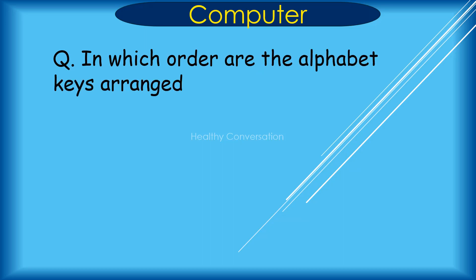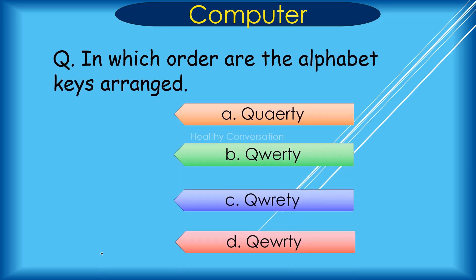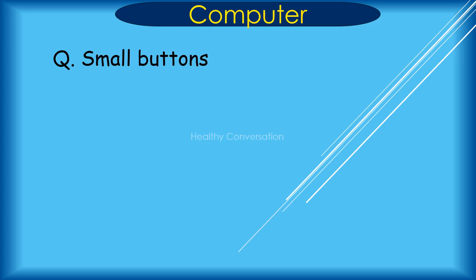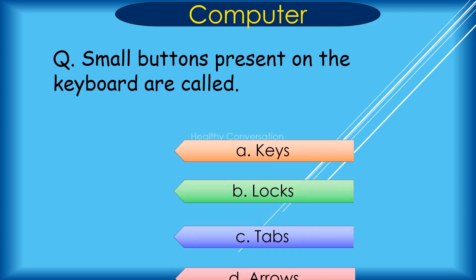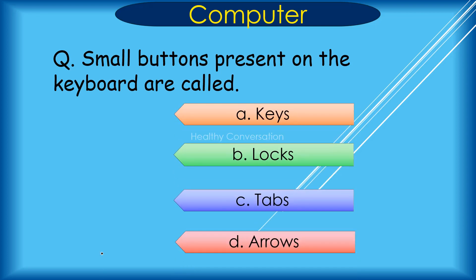Question: In which order are alphabet keys arranged? Correct answer is B. QWERTY. Small buttons present on the keyboard are called A. Keys, B. Locks, C. Taps, D. Arrows. Correct answer is A. Keys.